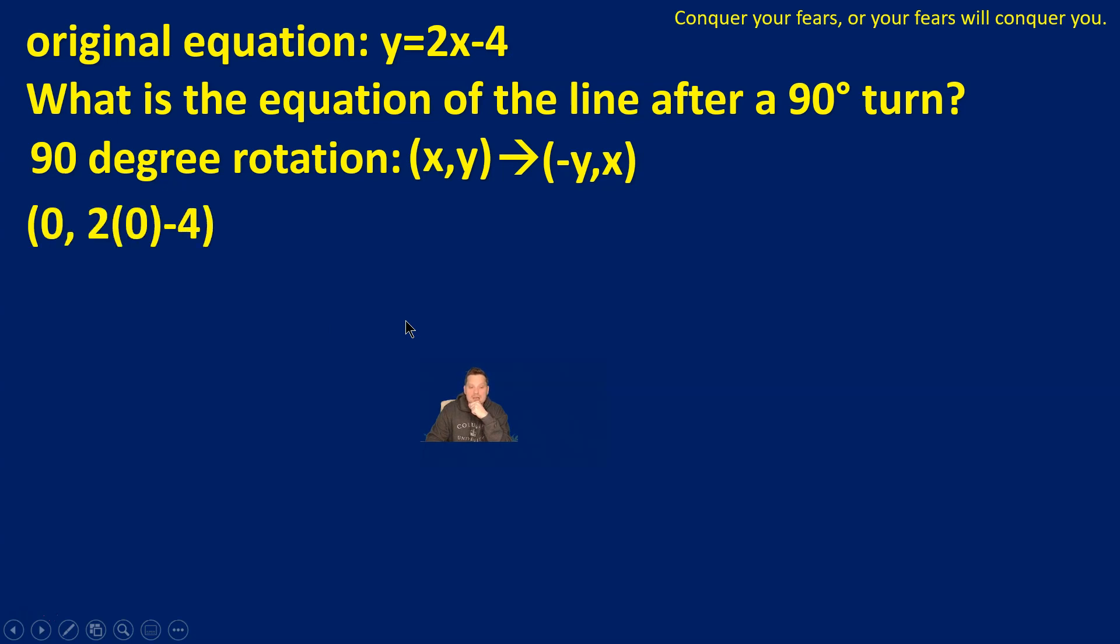You can first take a point. I'm going to replace x with 0, and I'm going to calculate the corresponding y-coordinate. Over here, (0, 2 times 0 minus 4). So I'm generating a point on the original line 2x minus 4. Now when I work this out, that's going to give me (0, -4).